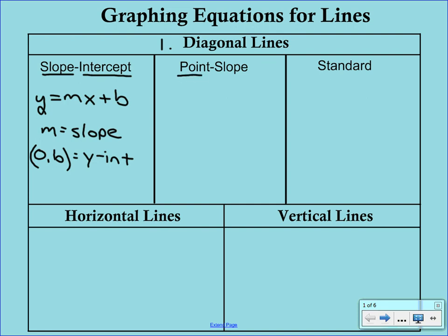Point-slope form looks a little bit different. It's y minus y1 equals m times (x minus x1). The reason this is called point-slope form is because the equation literally gives you a point, which is (x1, y1), and the slope, which is m.